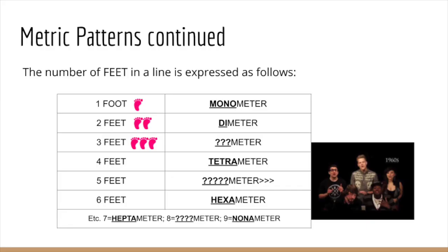Now that we know how to figure out what a sound pattern is in poetry — iambic, trochaic, dactylic, etc. — we also need to measure how many feet are in each individual line of poetry. It's fairly intuitive: one foot is called monometer; two feet, dimeter; three feet, trimeter; four feet, tetrameter. Maybe that one isn't so intuitive — but can you guess what five feet in a line would be called? Correct: pentameter.